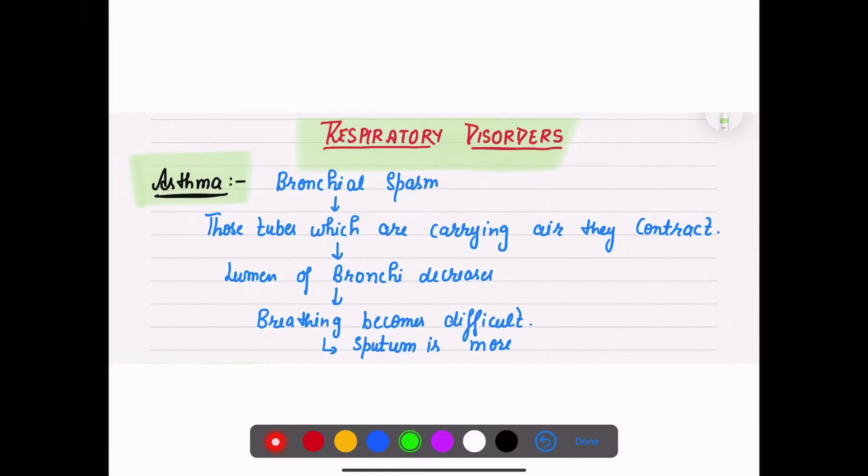So here I'm going to talk about the last topic of our today's lecture, that is respiratory disorders which are mentioned in your NCERT. The first is asthma. Asthma is a very common name, everybody is aware of it. It is known as bronchial spasm.